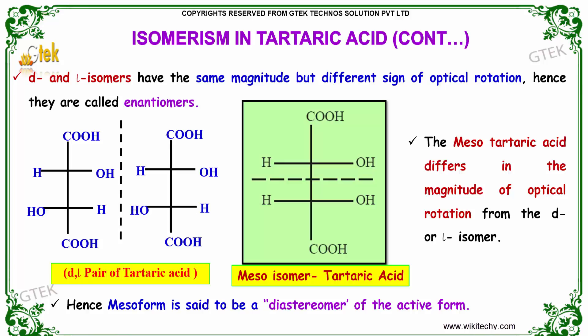The mesotartaric acid is very much different in the magnitude of optical rotation from the dextro and levotartaric isomers. Moreover, the meso form is also said to be a diastereomer of the active form.